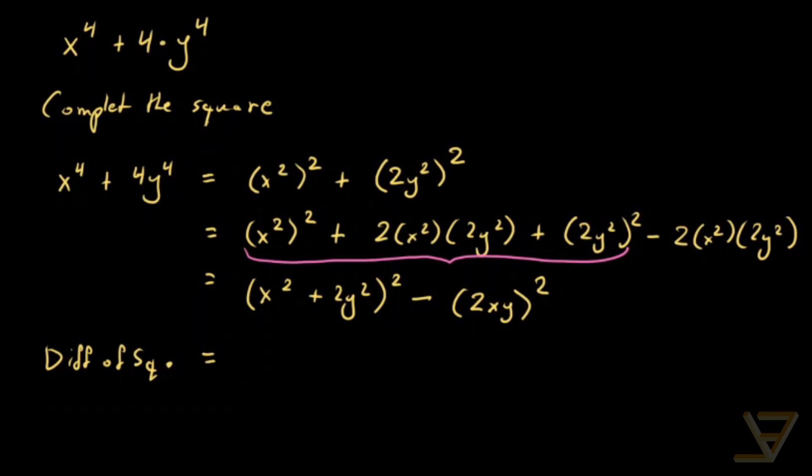So what that gives us is x squared minus 2xy plus 2y squared times x squared plus 2xy plus 2y squared. And that's Sophie Germain's factorization.